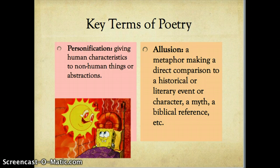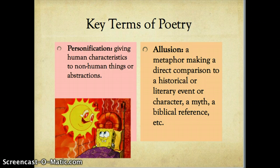Another key term would be an allusion, and this is a type of reference that exists within a piece of literature to another piece of literature — a direct comparison where the text you're reading makes reference to another text. You'll usually find historical references, references to something that occurred in the past, to a literary event or character. Often Greek myth is a big one for poetry, so there might be an allusion to a Greek myth or a biblical reference.